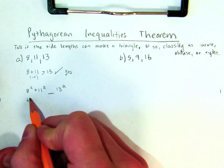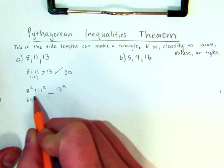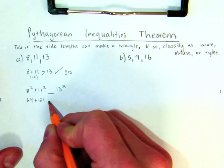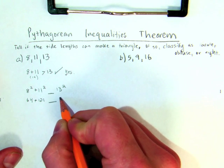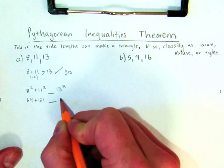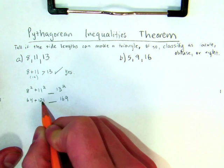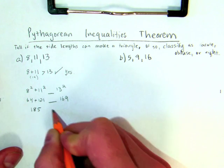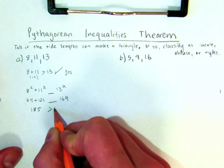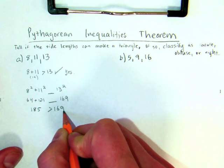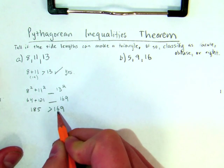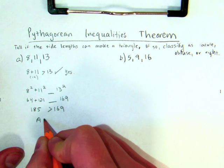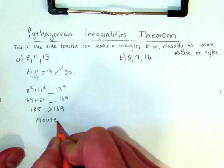8 squared is 64, and I'm going to treat this and solve it as if it's an equation. 64 plus 121 is, and I'm still waiting to figure out, 13 squared is 169. Add 64 plus 121, and I get 185, which winds up to be greater than 169. Now if the two sides add up and are greater than 169, this is going to be an acute triangle.